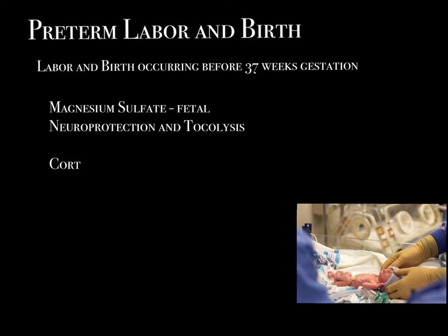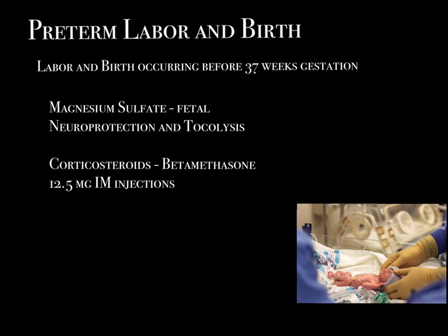The preferred tocolytic agent at this point is magnesium sulfate because you kill two birds with one stone. You can't give procardia — a calcium channel blocker — with mag sulfate, and you have to be very cautious using terbutaline with mag sulfate due to cardiovascular and pulmonary complications. The typical mag sulfate protocol is a 4-gram bolus followed by 1 to 2 grams per hour. This is a high-risk medication — the same precautions as for preeclampsia. Check urine output, check DTRs for absent or diminished reflexes, check blood pressure for maternal hypotension, watch fluid balance carefully because pulmonary edema is a side effect, and assess level of consciousness. Two RNs should co-sign any initiation or rate change.